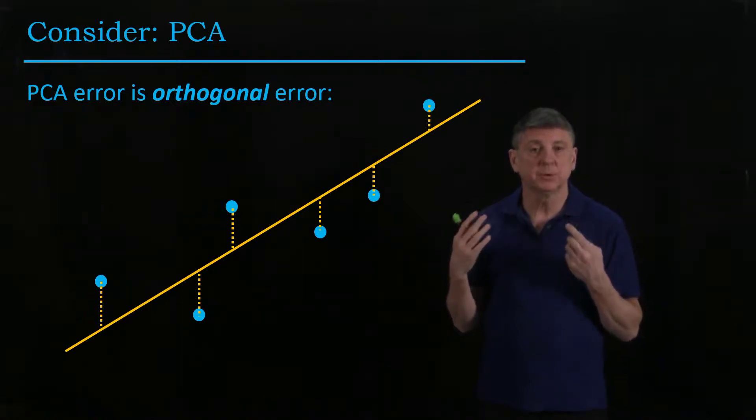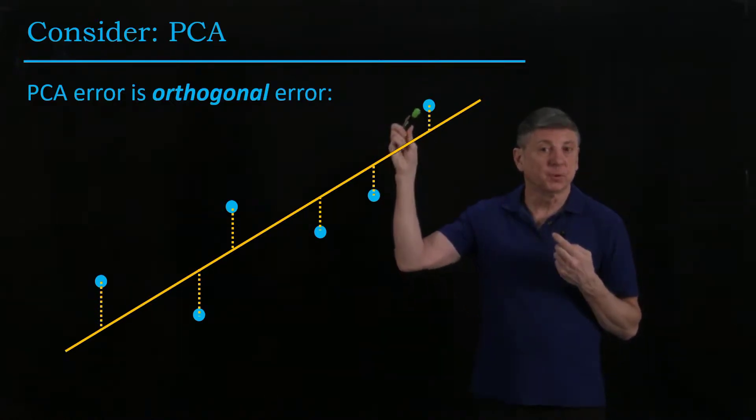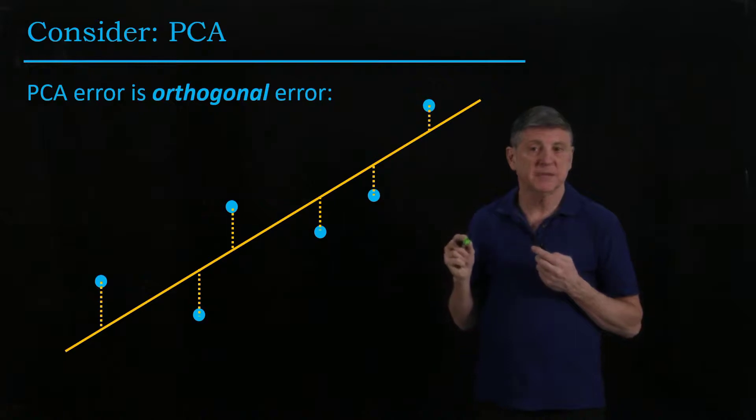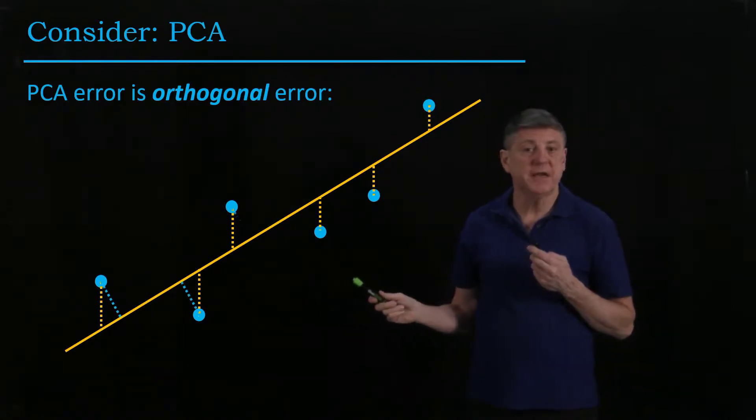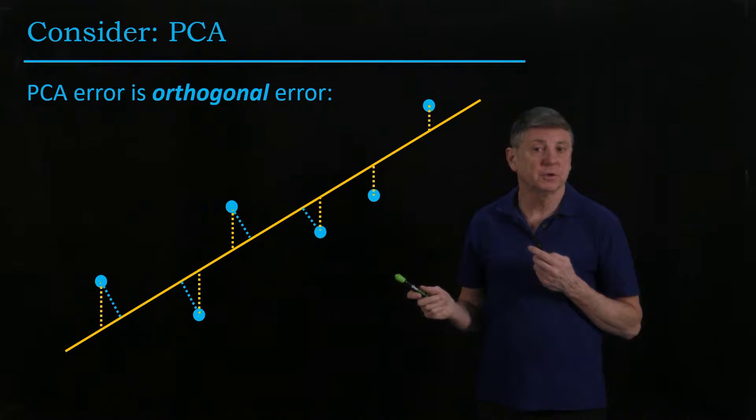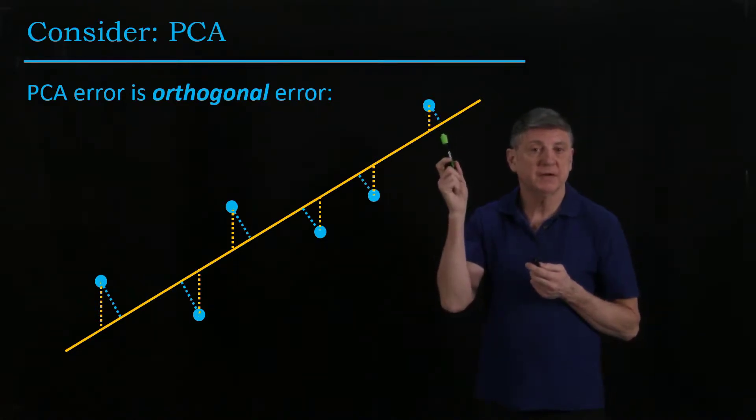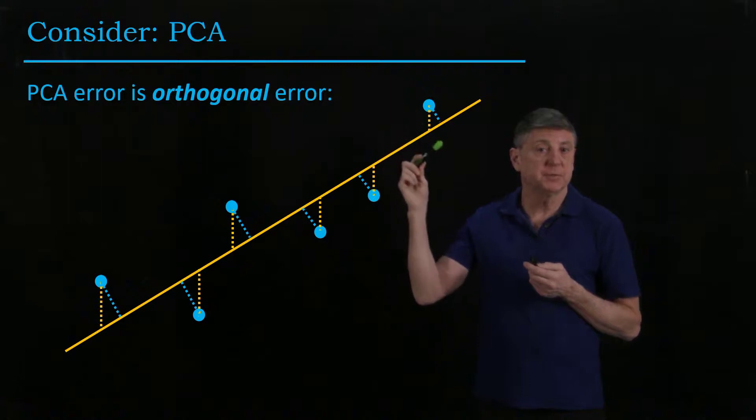preferring one as a vertical error doesn't make sense. What we should really do is calculate what's called the orthogonal error. That is, we want to find the sum of the squares of the errors from each of these data to the best-fitting line.